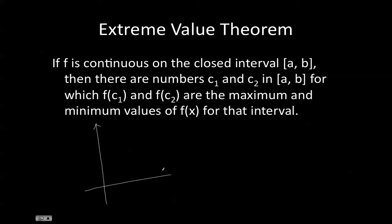For example, if we had a function that looked like this, and our a value is over here and our b value was over here, then we have f(a) over here and f(b) over here. We know that there's an f(c1) that represents the maximum value, which is over here, and it corresponds to c1, which is in between a and b.